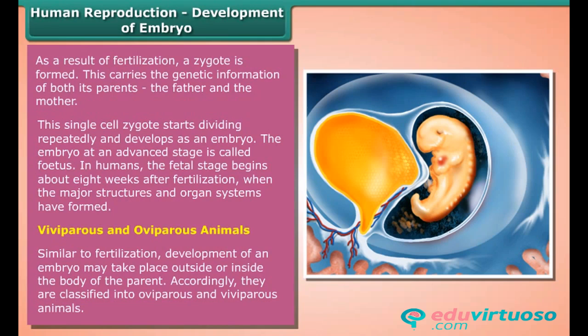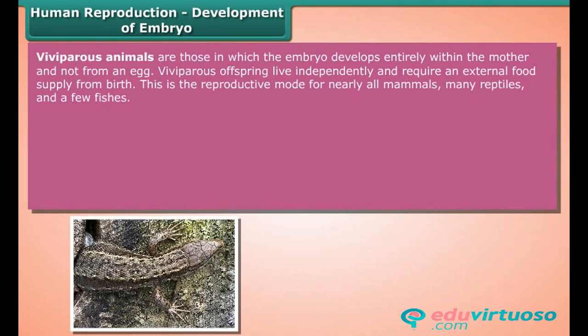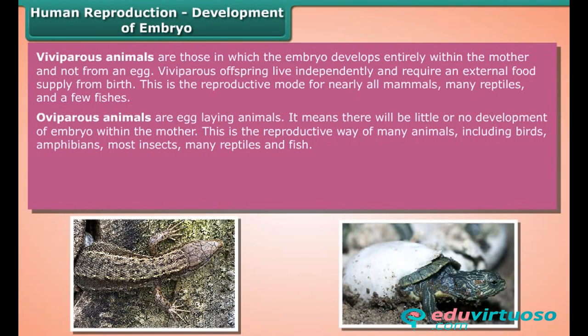Development of an embryo may take place outside or inside the body of the parent; accordingly, animals are classified into oviparous and viviparous. Viviparous animals are those in which the embryo develops entirely within the mother and not from an egg. Viviparous offspring live independently and require an external food supply from birth. This is the reproductive mode for nearly all mammals, many reptiles, and a few fishes. Oviparous animals are egg-laying animals, meaning there is little or no development of the embryo within the mother. This is the reproductive mode of birds, amphibians, most insects, many reptiles, and fish.